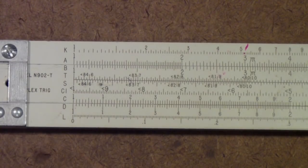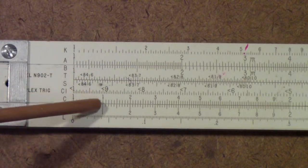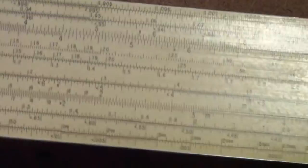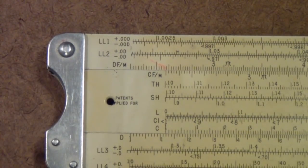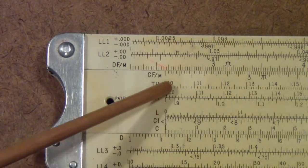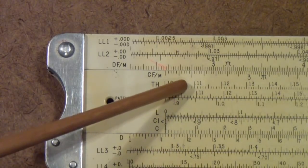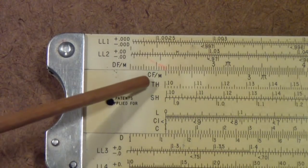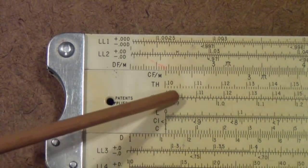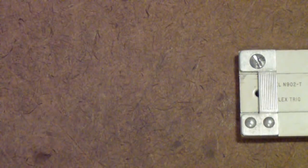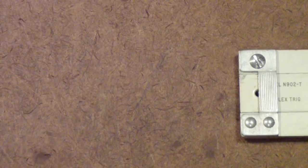Pickett used a photo process to put their scales on, and one reason you do need to be careful when you're collecting Pickett rules is there might be a temptation to try and remove a lot of this nicotine and dirt and surface color discoloration. But, if you go in here and try to remove this, you're going to wipe away the scales as well. So, be careful with Pickett rules. The scales are a little more fragile than the rules that have engraved scales.